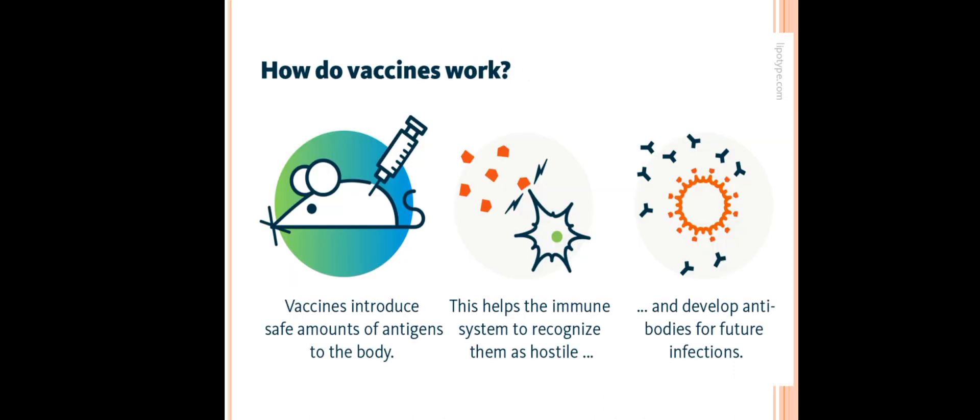So how do vaccines work? This is the general mechanism. Vaccines introduce a safe amount of antigens to the body, as shown in the diagram, which helps the immune system recognize them as hostile and develop antibodies for future infections.